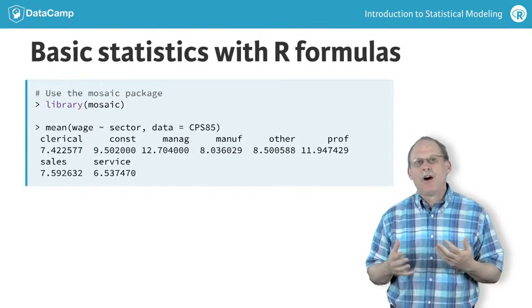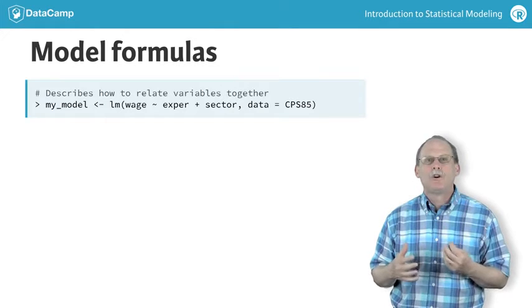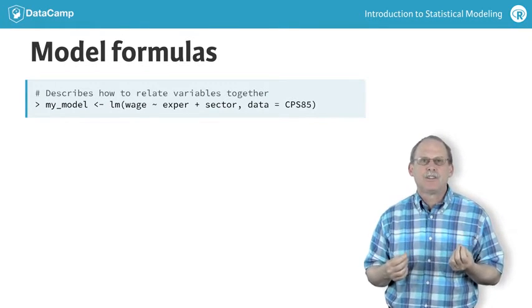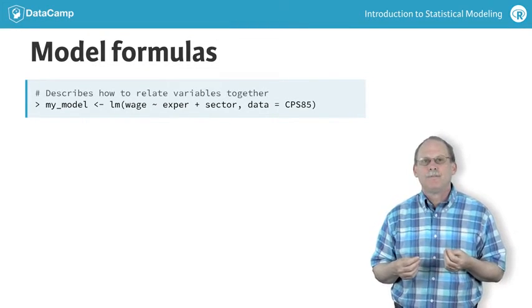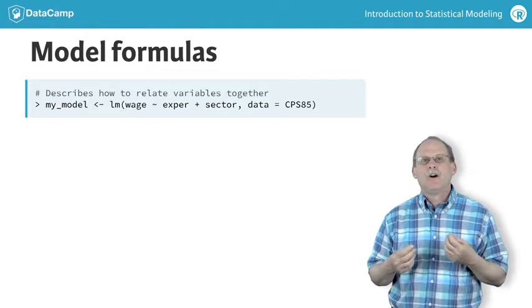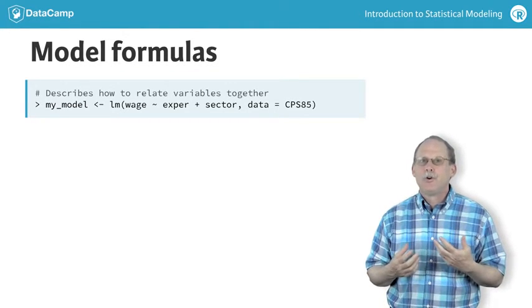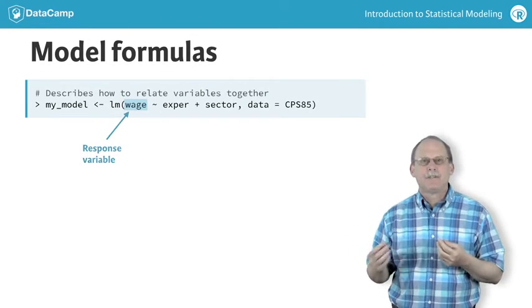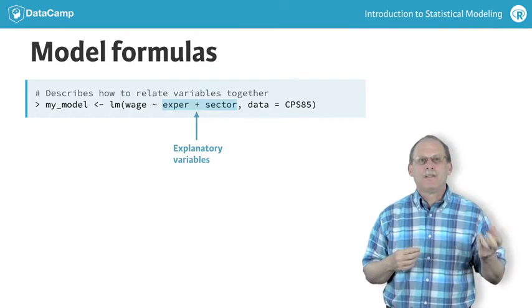Statistical models are often built to predict or account for a single variable, which we will call the response variable. The basic idea is to construct a function that produces values for the response variable as the function's output. The function's inputs are called the explanatory variables. In formulas for models, the response variable is always to the left of the tilde. The explanatory variables are to the right of the tilde.